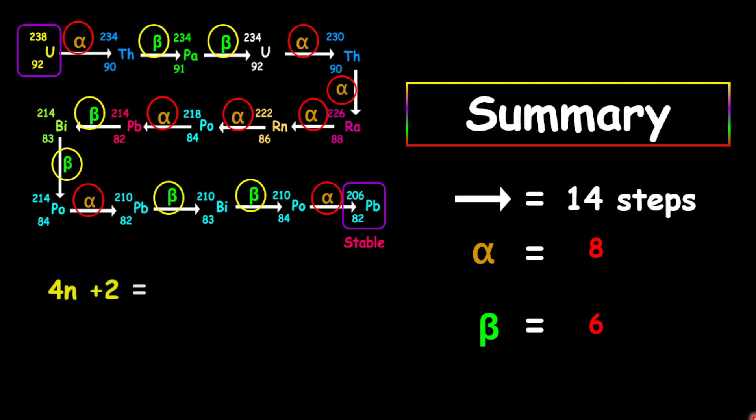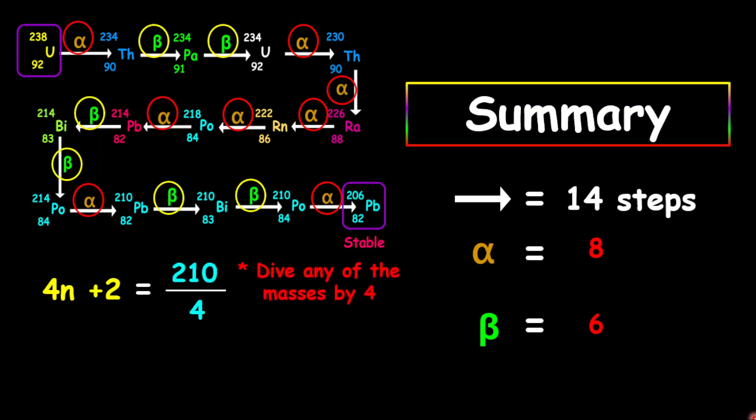Now to check why this is called a 4n plus 2 series: we're going to take any of the masses — I'm going to choose 210. If I divide 210 by 4, I get 52.5, which indicates a remainder of 2. So it is called a 4n plus 2 series because of the remainder of 2.